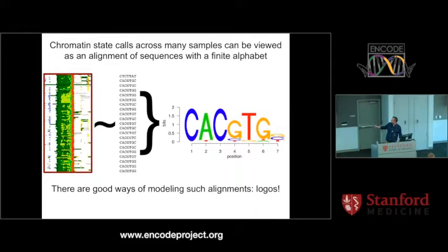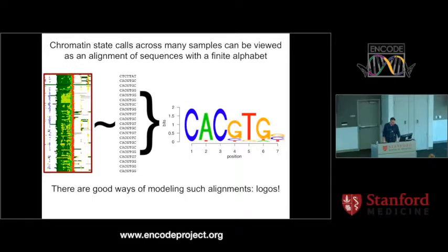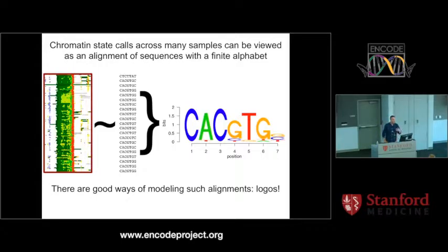We always show it like this as a logo. This tells us that a particular base is very well conserved — indeed there's a C everywhere. Whereas, for example, at the last position with G, C, and T, it's never an A, so we show this as a less tall position because it contains less information. The nice thing about these logos is that you can take into account the background frequency of each residue or nucleotide. So if you have a very AT-rich genome, you can sort of take that into account.